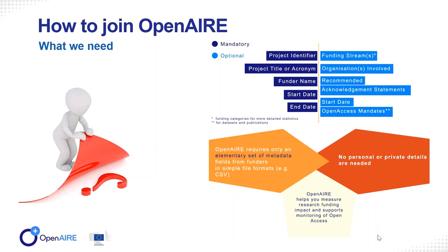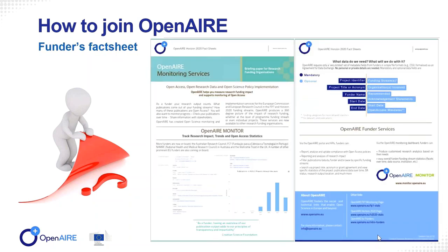Moreover, there are additional optional datasets that could be provided, such as funding streams, organizations involved, recommended acknowledgement statements, and start date of open access mandates. However, the more datasets a founder can provide, the more matches we will have during the mining process and the more results. This information should be provided in an Excel file. You can find all these requirements in the new Founders Fact Sheet, as well as all information related to the Open Air Monitoring Services.